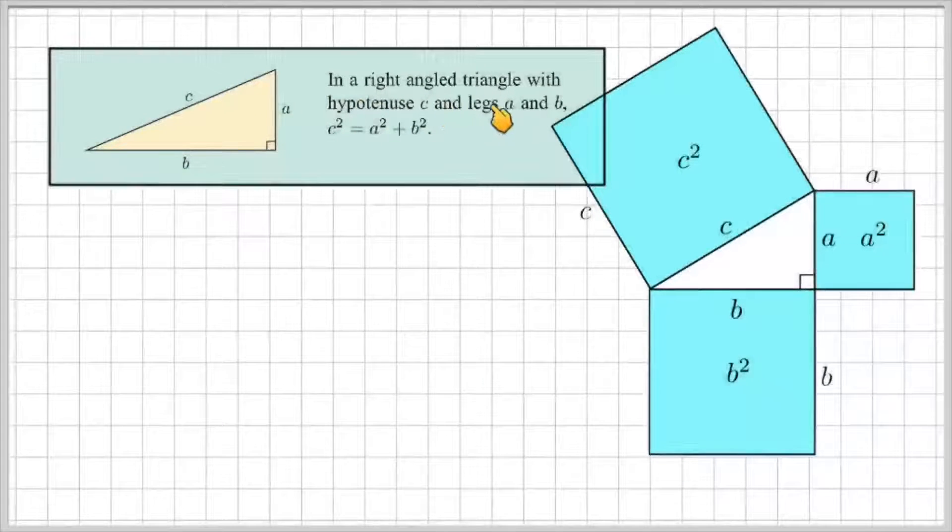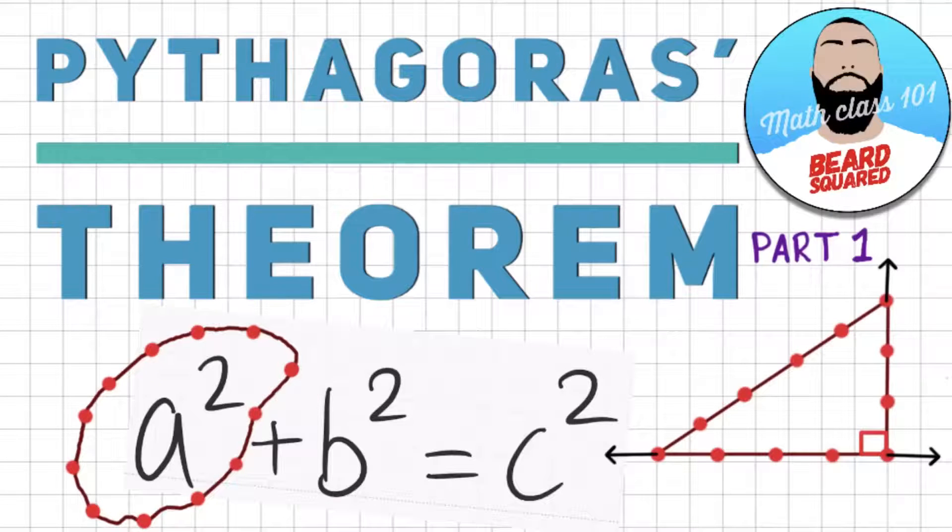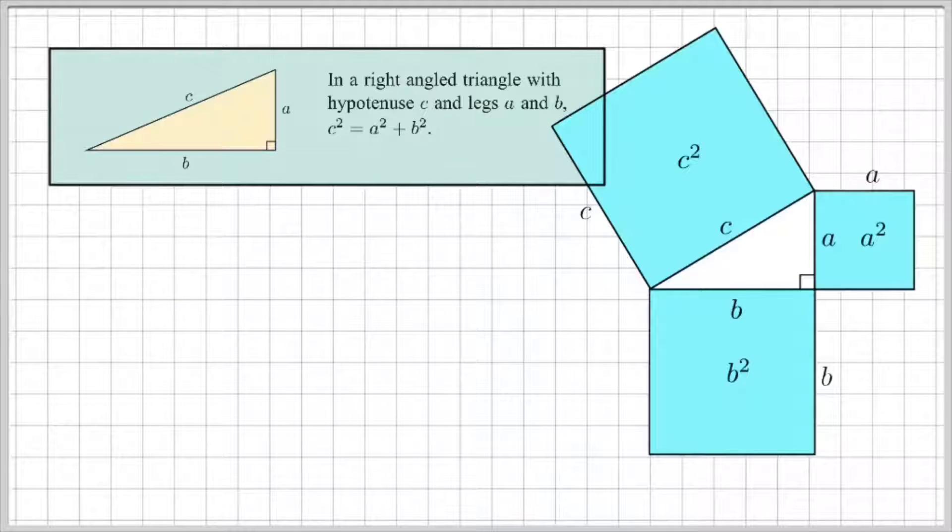In a right-angled triangle with hypotenuse c and legs a and b, we have the formula c squared is equal to a squared plus b squared. If you have no idea what I'm talking about, I really do encourage you to go watch part one so you get a better understanding of Pythagorean Theorem and then we can move on to real-life application questions.